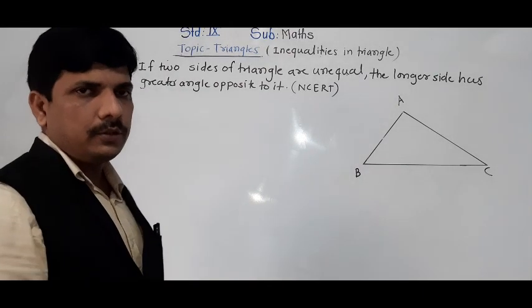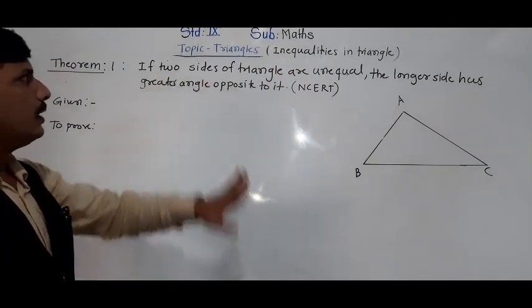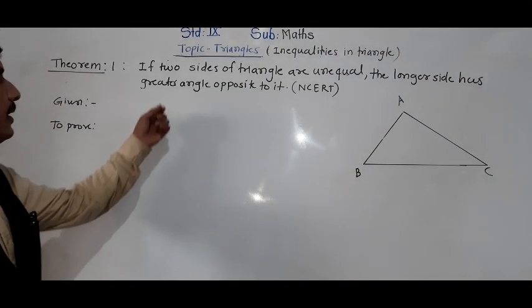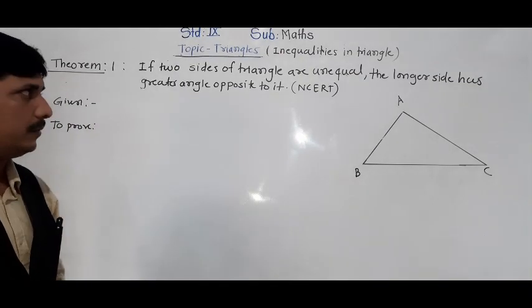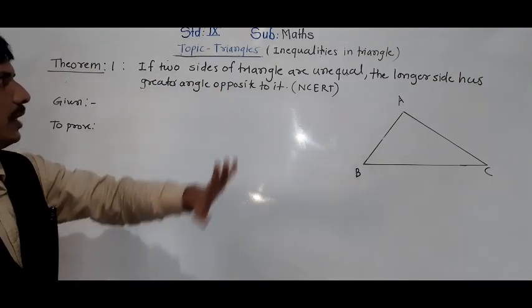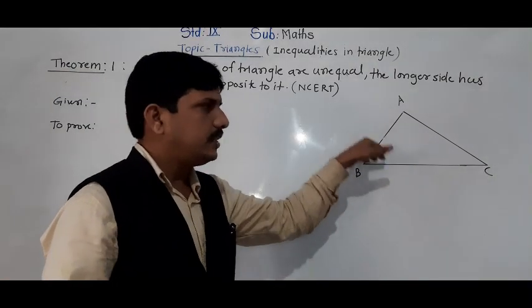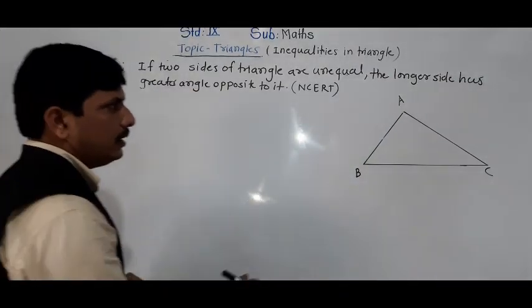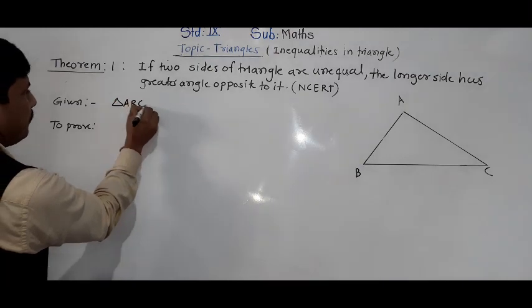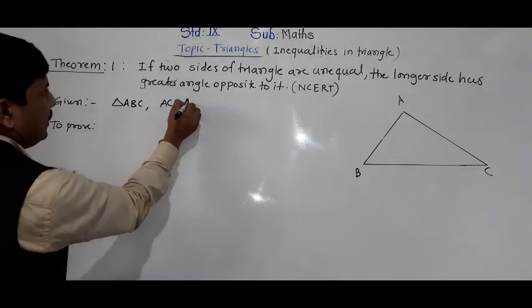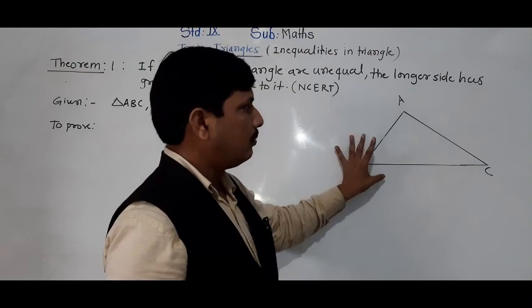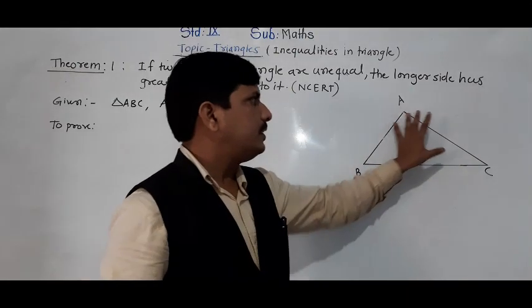Now the second theorem from the inequalities of a triangle: if two sides of a triangle are unequal, the longer side has the greater angle opposite to it. Triangle ABC is given. I am saying here AC is greater than AB — any two sides we can take. I have taken AC is greater than AB, so these two sides are unequal.